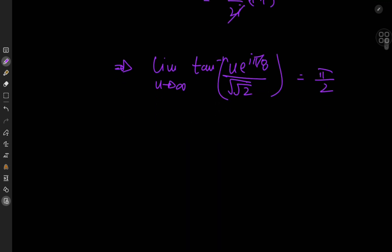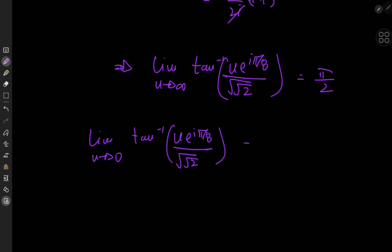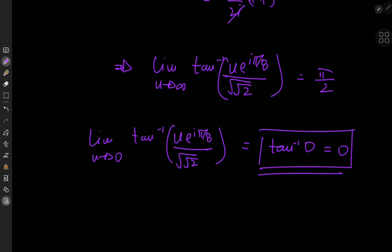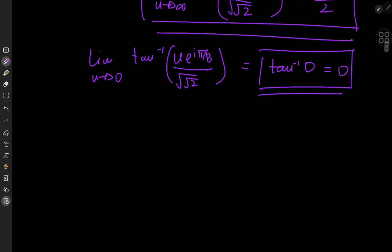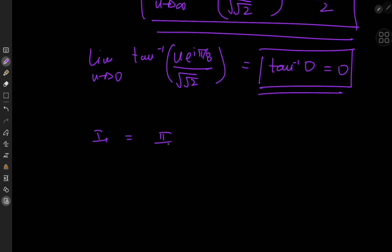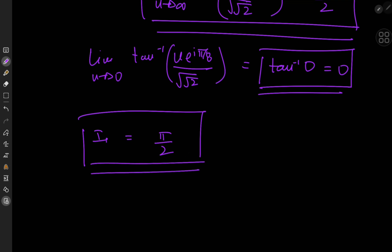Now for the lower limit: the inverse tangent of u·e^(iπ/8)/⁴√2 evaluated at u=0. Zero times some complex number is 0, and arctan(0) is 0. So I₁ works out very conveniently to π/2 times e^(iπ/8) divided by ⁴√2.